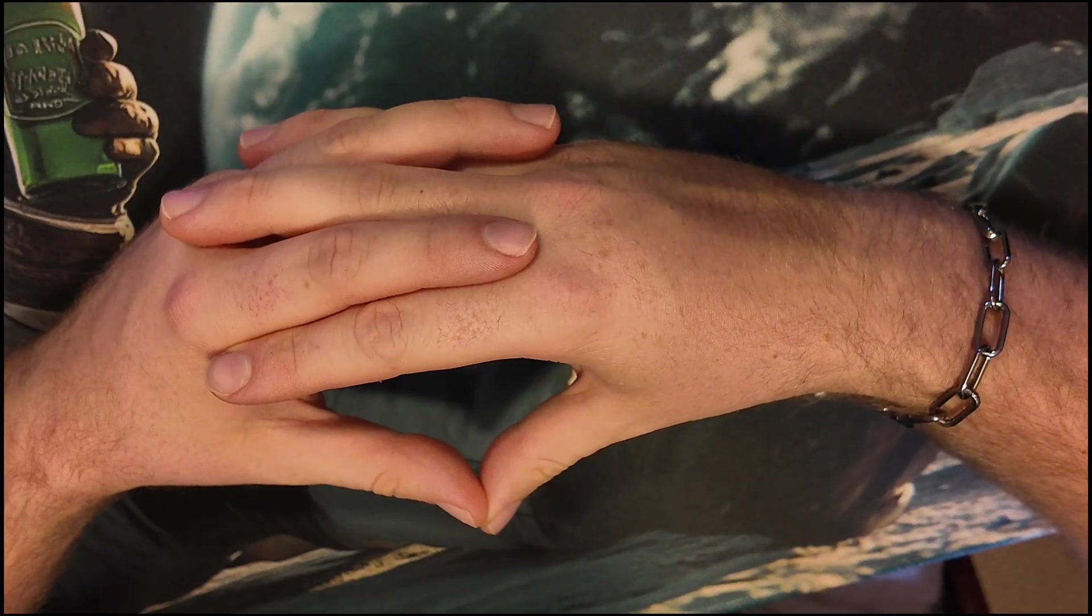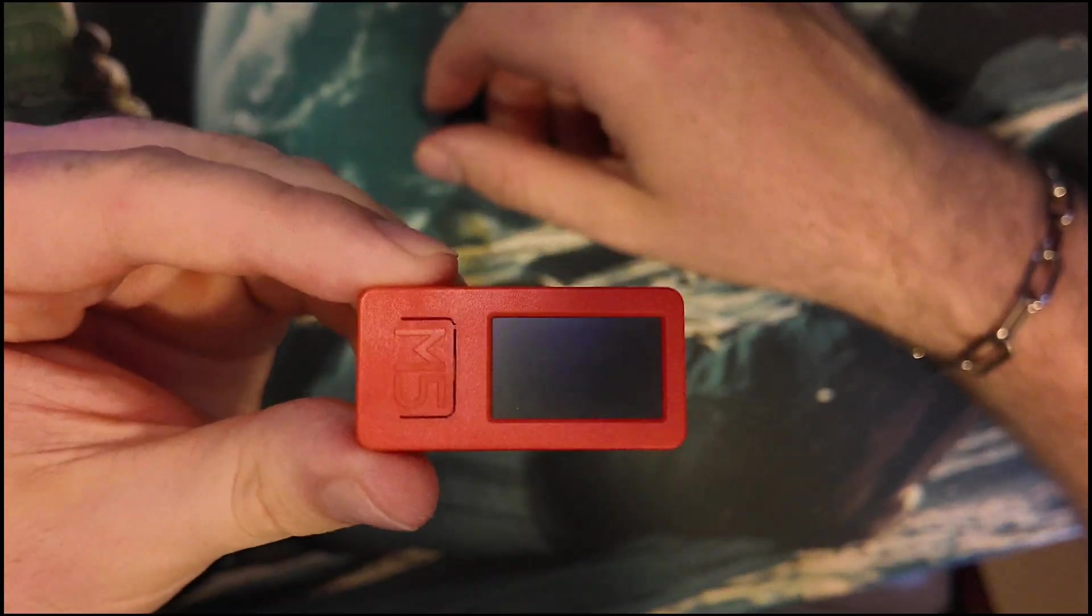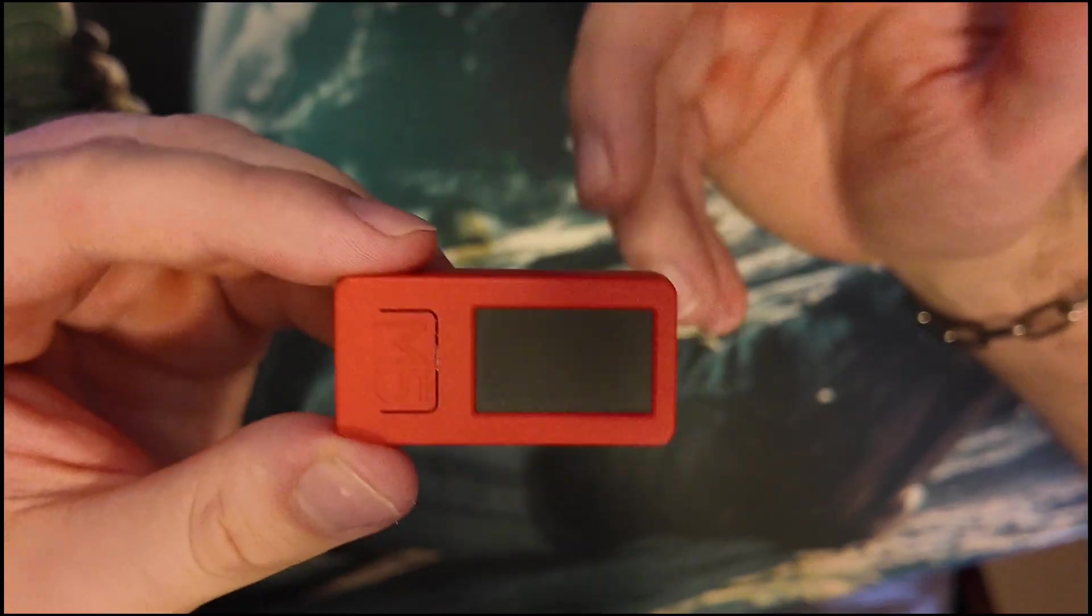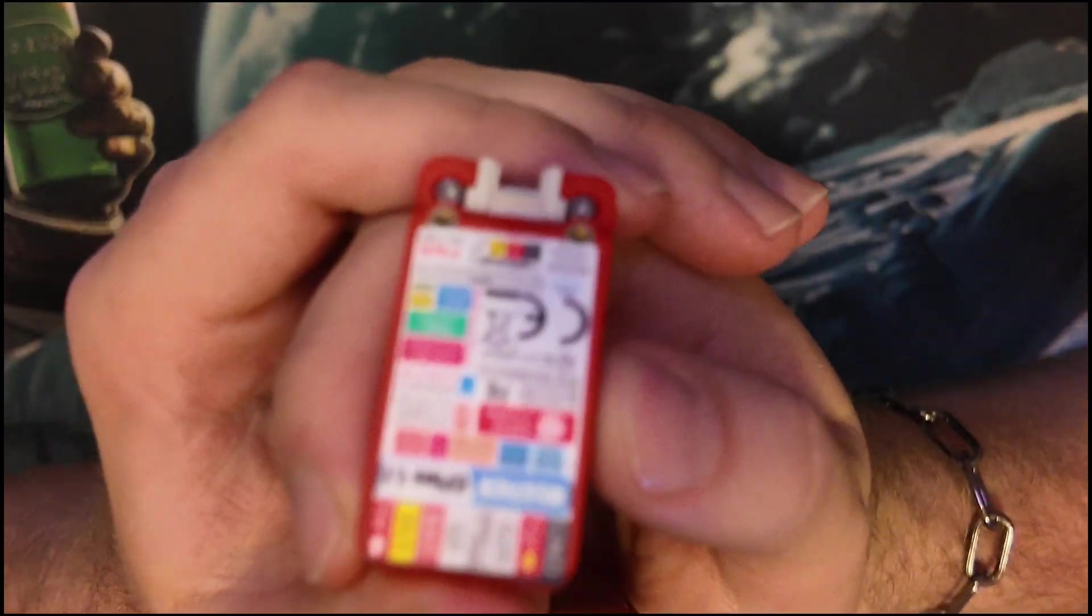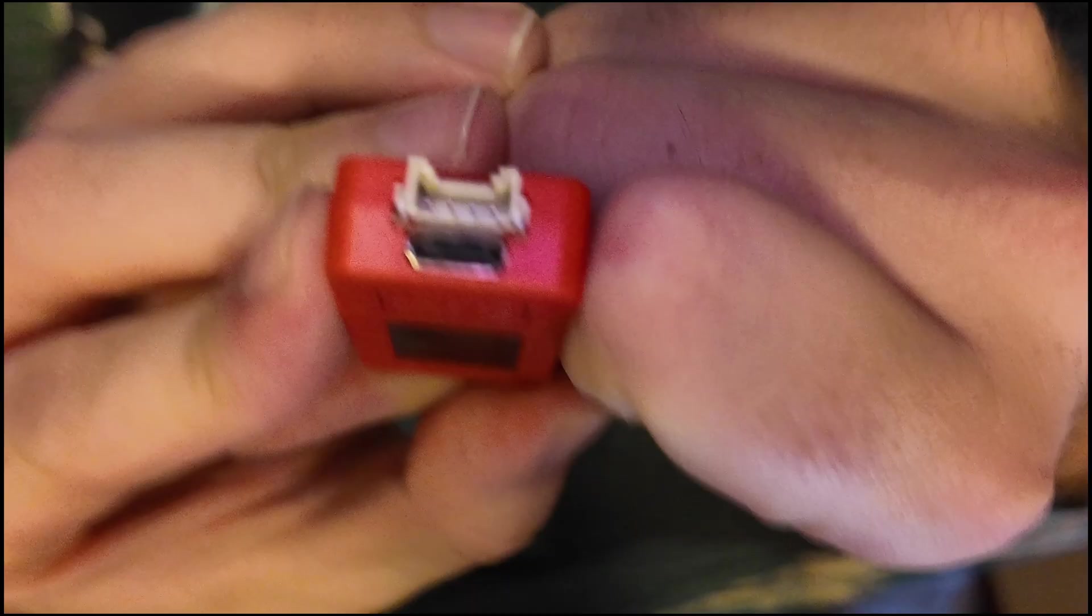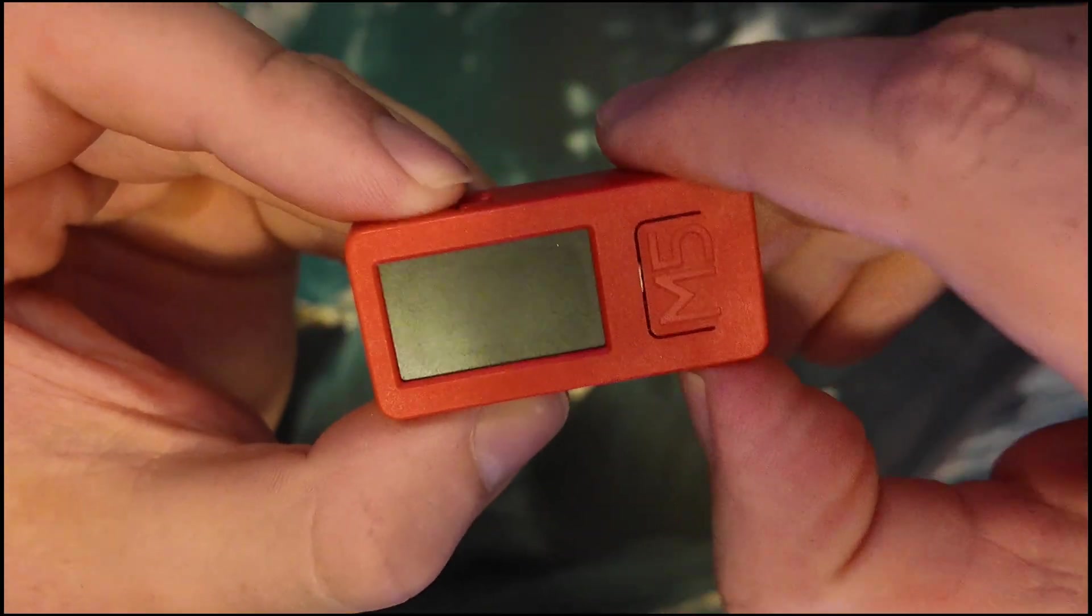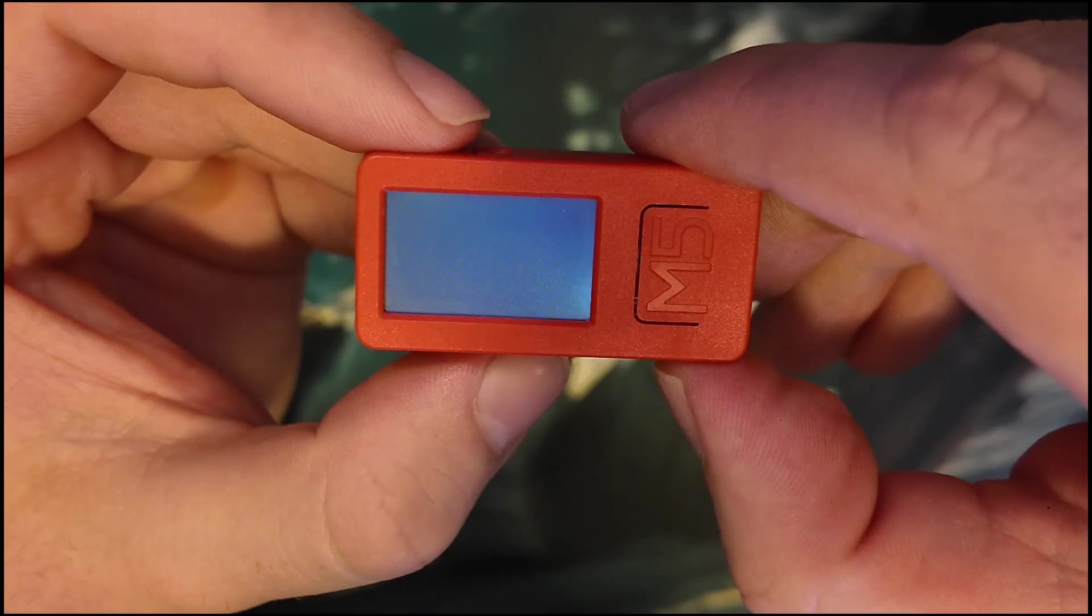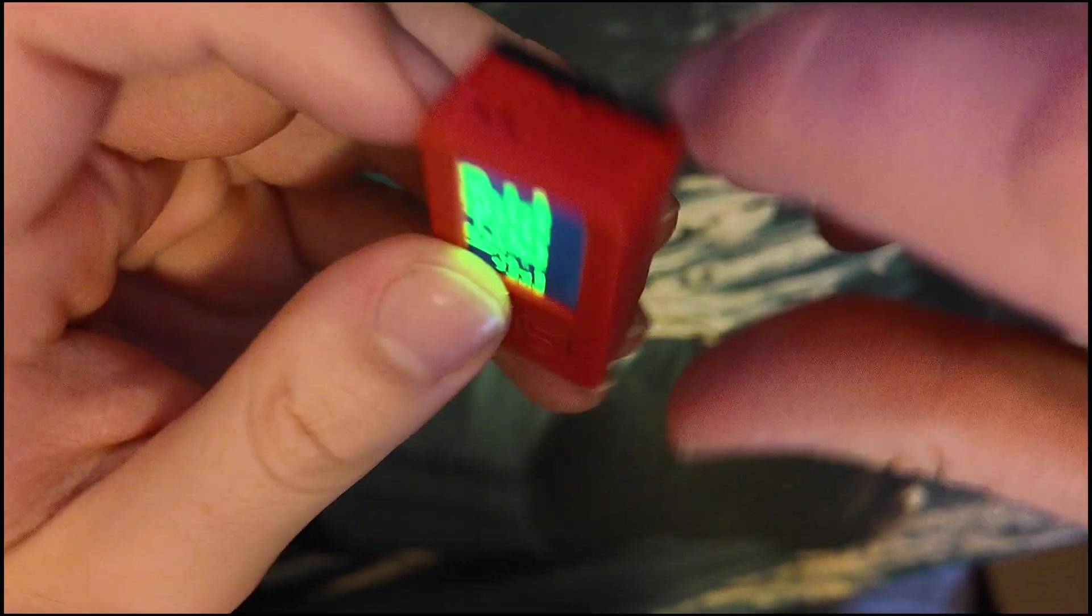Let's start with the second one, which is the M5 Stick C—the red one, or orange, whatever you think it is. In person it looks red. You have your breakdown at the back with your pins here. Type-C as well, which is user-friendly.